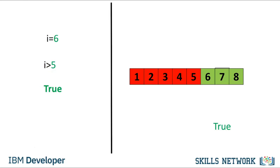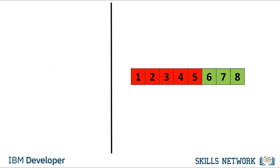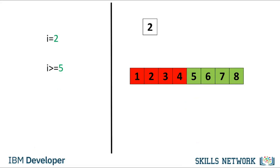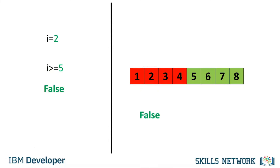If we modify the operator so that i is greater than or equal to 5, the condition becomes true. In this case, we include the value of 5 in the number line. If we set the value of i equal to 5, the operand will produce true. If we set the value of i to 2, we would get false because 2 is less than 5.